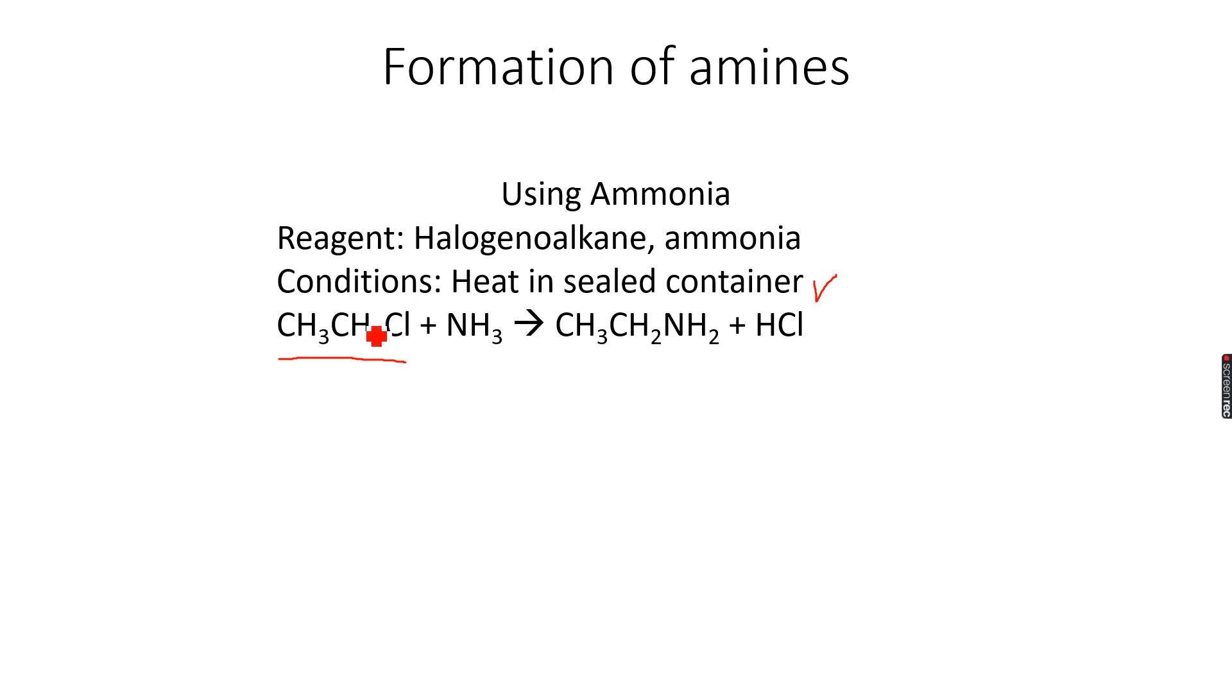This is chloroethane reacting with ammonia, and the condition is heat in a sealed container. As a result we get ethylamine, which is CH3CH2NH2, and we get HCl as a byproduct because the chlorine atom is replaced by an NH2 group.